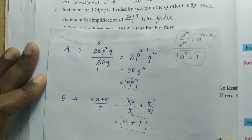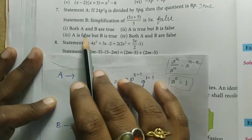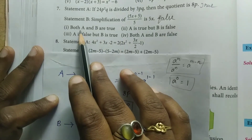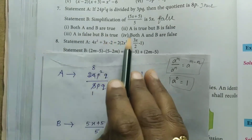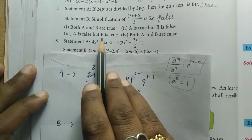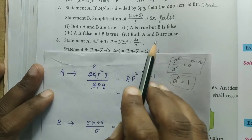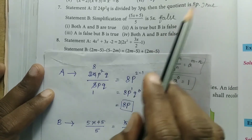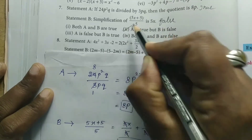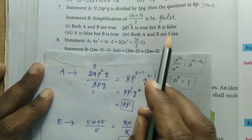So, first statement is true and second statement is false. Looking at the options: both A and B are true; A is true but B is false; A is false but B is true; both A and B are false. Since A is true and B is false, the correct answer is option: A is true, but B is false.